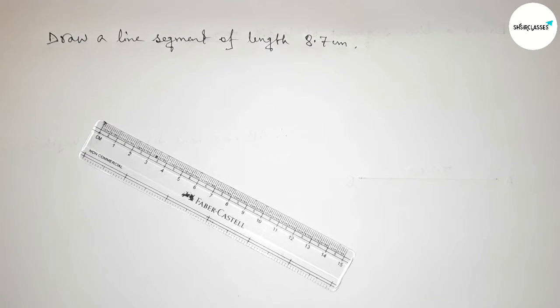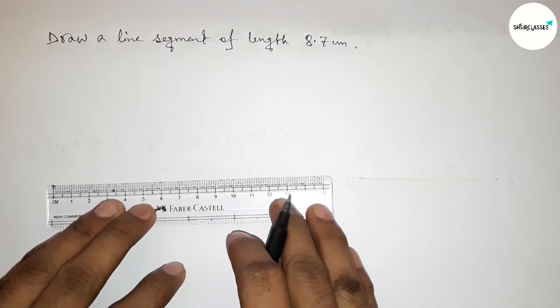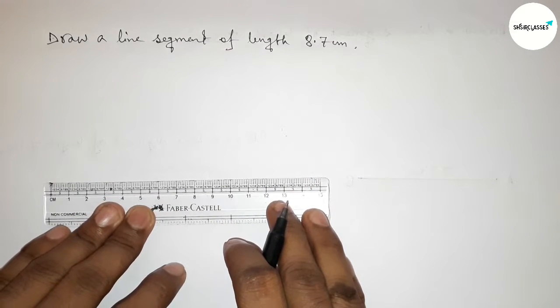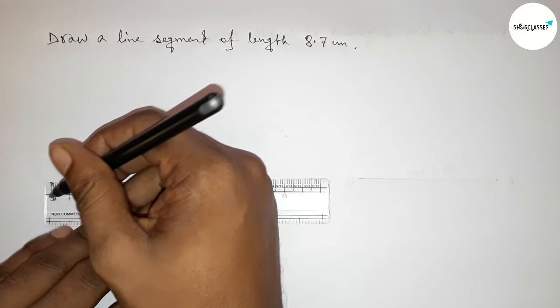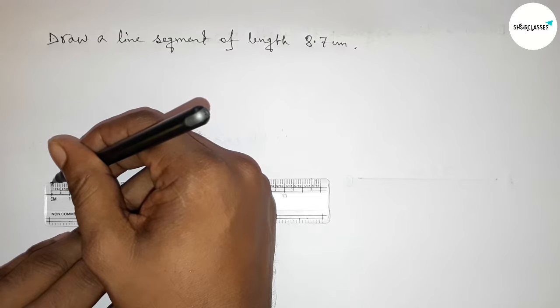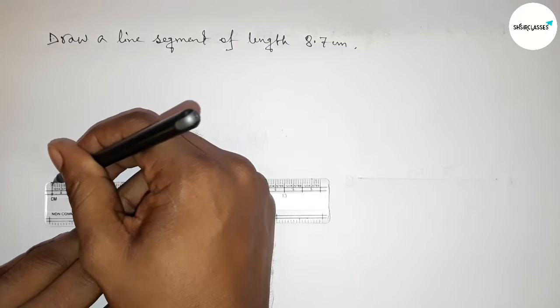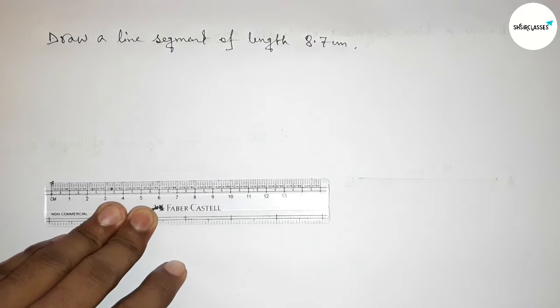So let's start the video. First of all, with the help of a scale, we have to put the scale perfectly here, then measure the length 8.7. So first counting, this is starting zero, so first marking the zero.